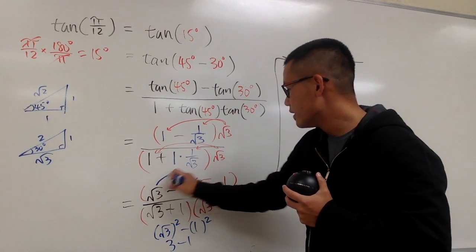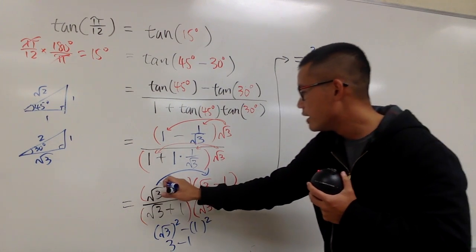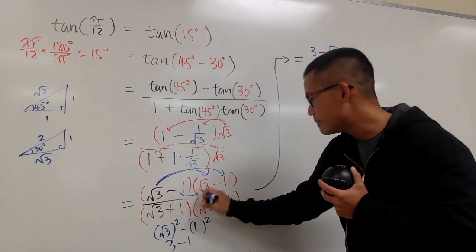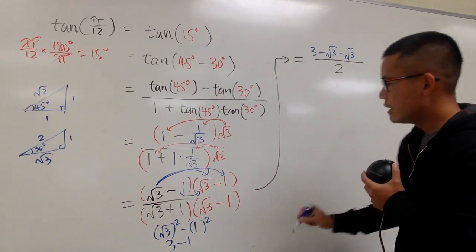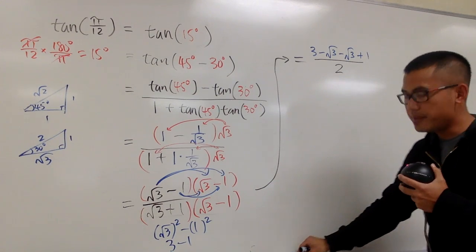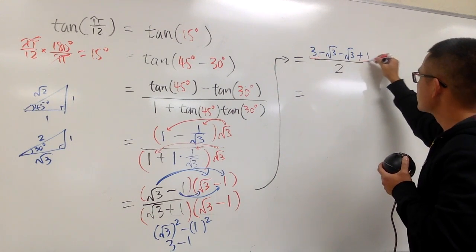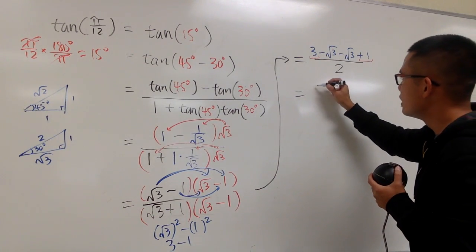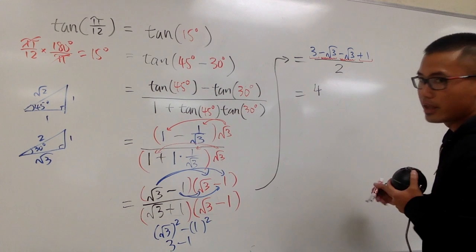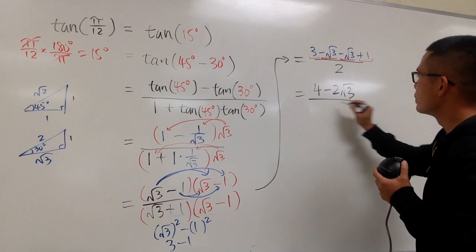On the top, let's FOIL it out: square root of 3 times square root of 3 gives 3; square root of 3 times negative 1 gives minus square root of 3; negative 1 times square root of 3 gives minus square root of 3; and negative 1 times negative 1 gives plus 1. Combining: 3 plus 1 is 4, and minus square root of 3 minus square root of 3 is minus 2 square root of 3. So the numerator is 4 minus 2 square root of 3, over 2.